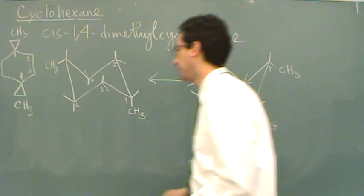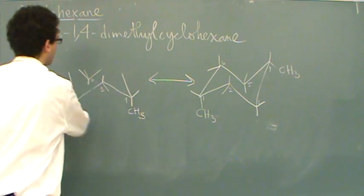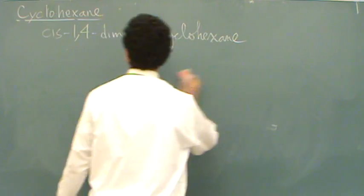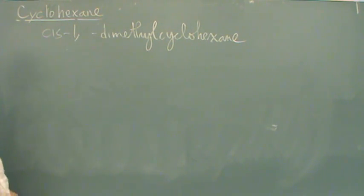Let's try one more. I'm going to erase this. Now, I'm just going to change one number so you can see the difference. This is going to be cis-1,3-dimethylcyclohexane. Here we go.